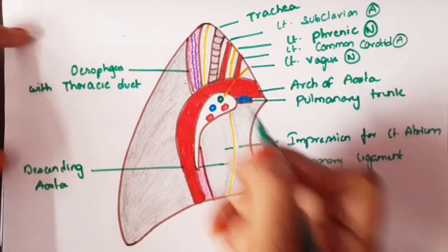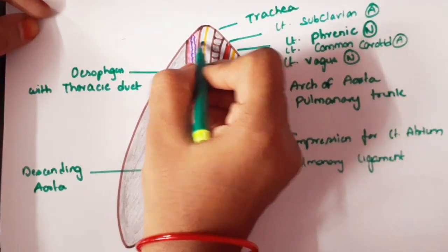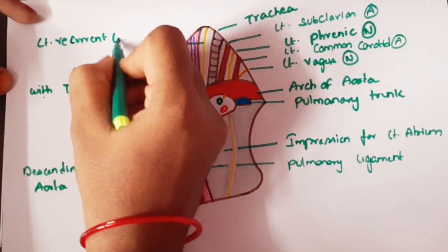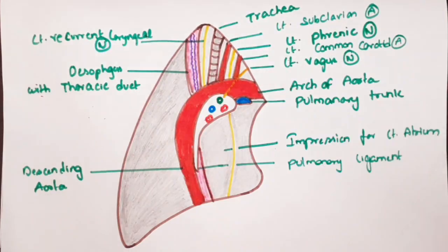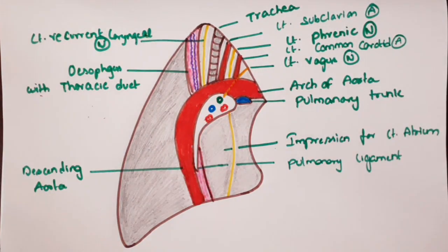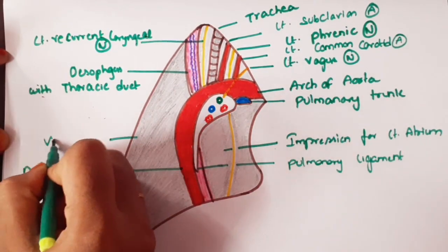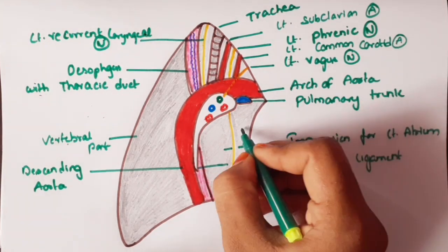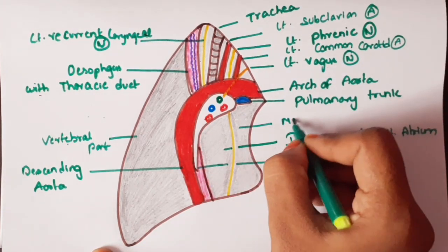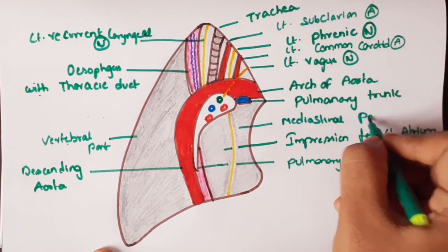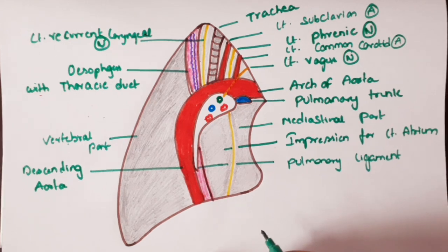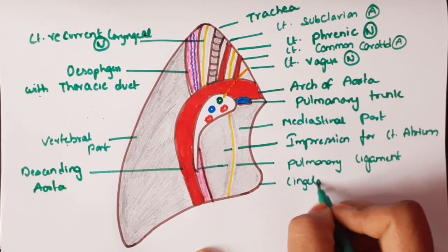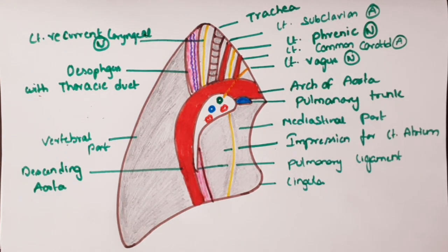As I already told you, the esophagus and thoracic duct are present here. The left recurrent laryngeal nerve is responsible for coarseness of voice in case of aneurysms. This is the vertebral part. This is the medial sternal part. This is the lingula, which is a tongue-shaped projection.